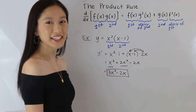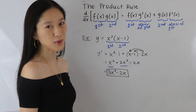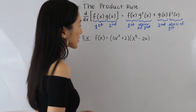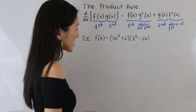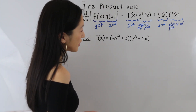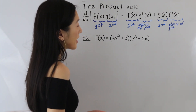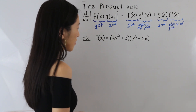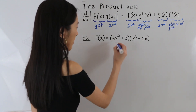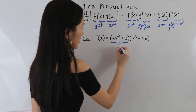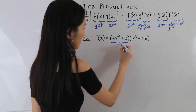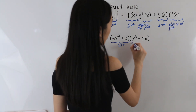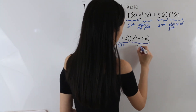Let's go ahead and take a look at another example. In this next example, we have f(x) is equal to 3x squared plus 2, times x to the fifth minus 2x. Again, let's start by labeling our functions. Here we have our first function, and here we have our second function.